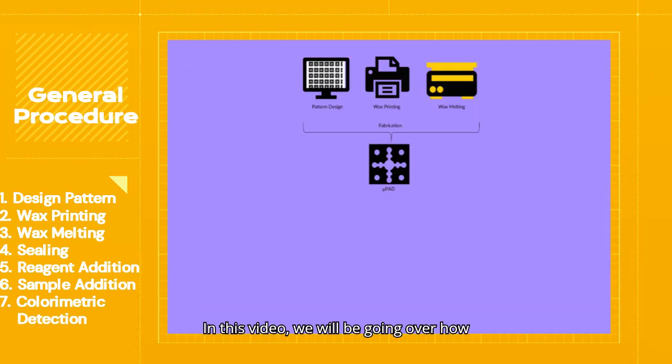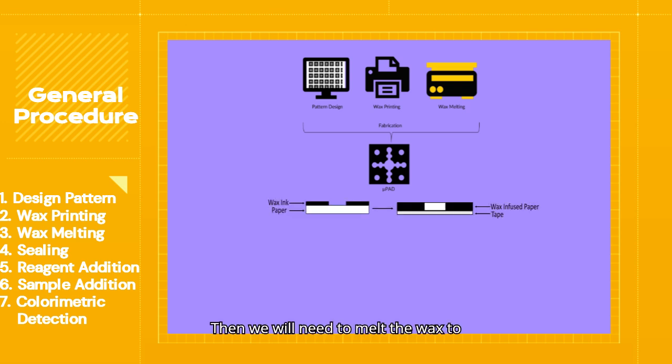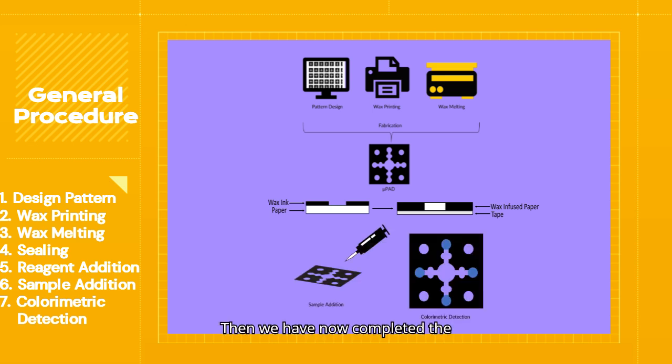In this video, we will be going over how to print the pattern from AutoCAD using a wax printer. Then we will need to melt the wax to fully infuse the wax into the paper, creating our hydrophobic barrier. Then we have now completed the fabrication part and can now apply the reagent to the detection zone and add our sample in for a colorimetric detection of the analyte.